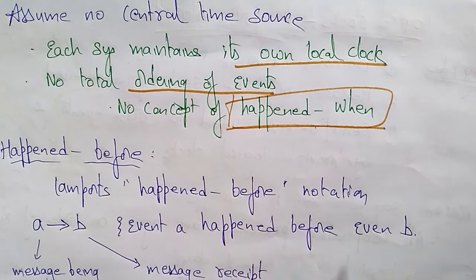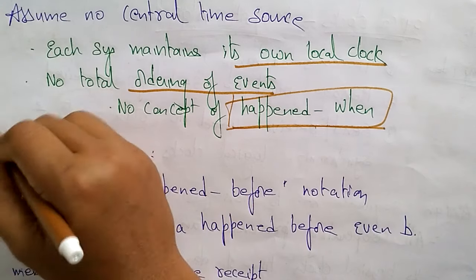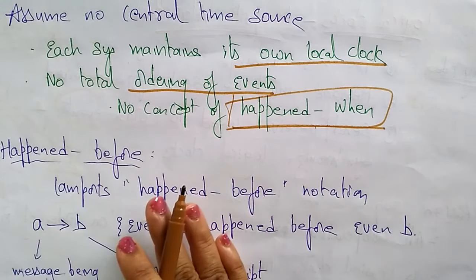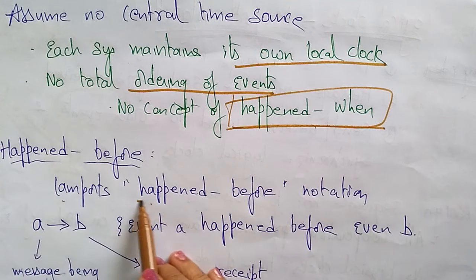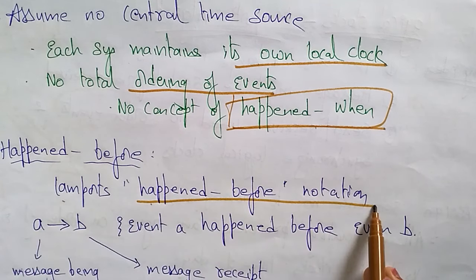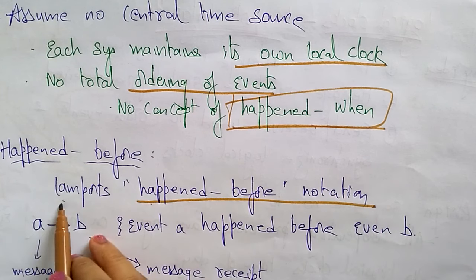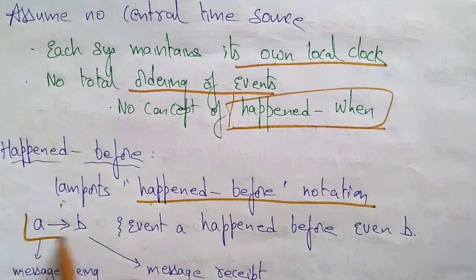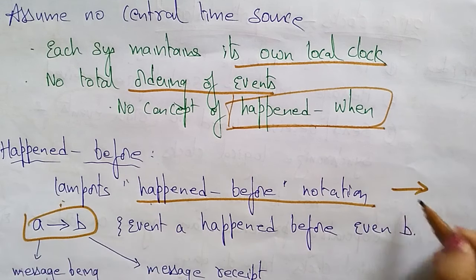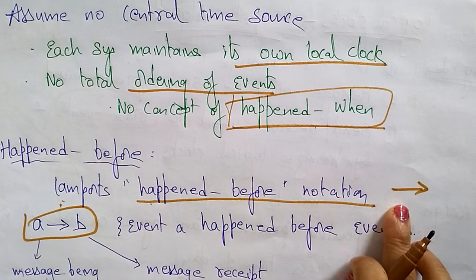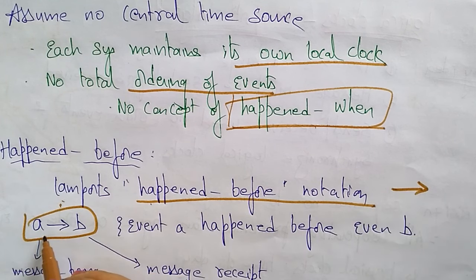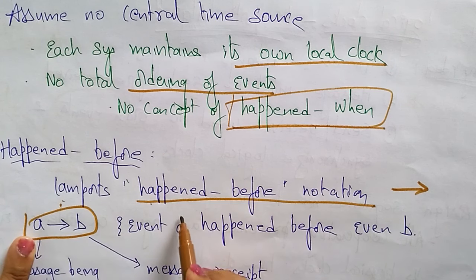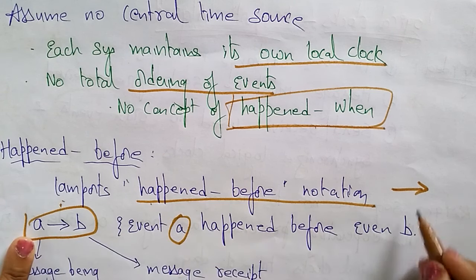You have to concentrate on 'happened before,' not 'when.' Lamport uses the happened-before notation. This is the notation — you call it the happened-before notation. Here A → B determines that event A happened before event B.